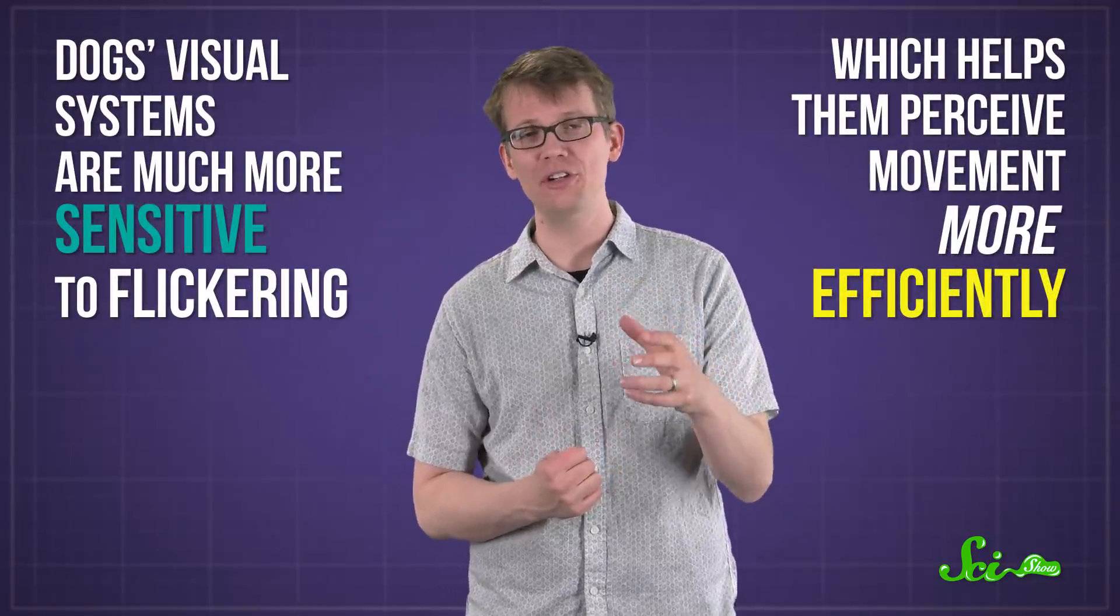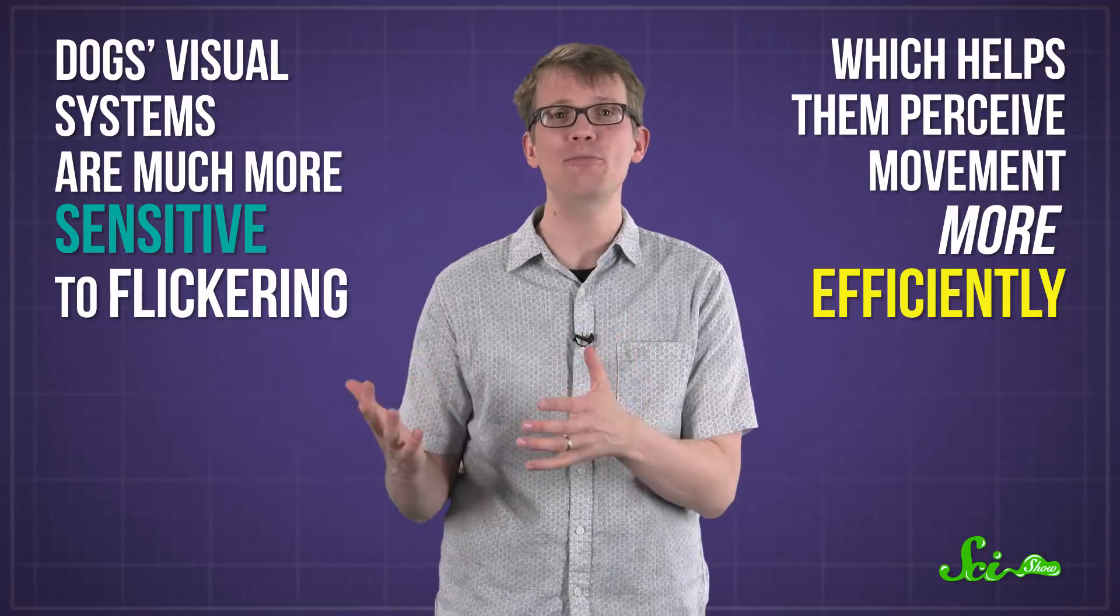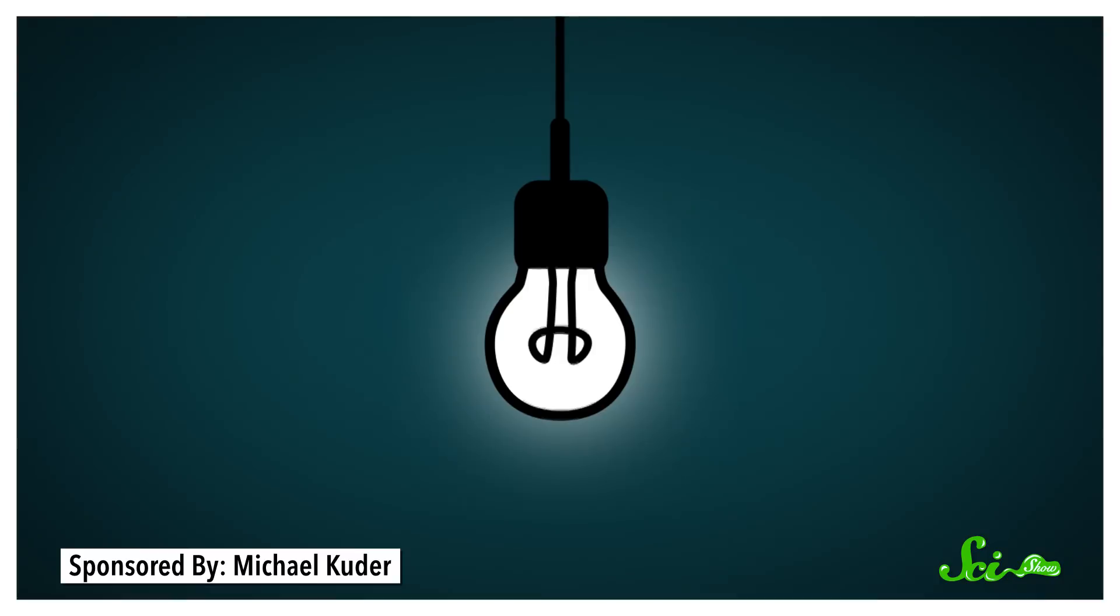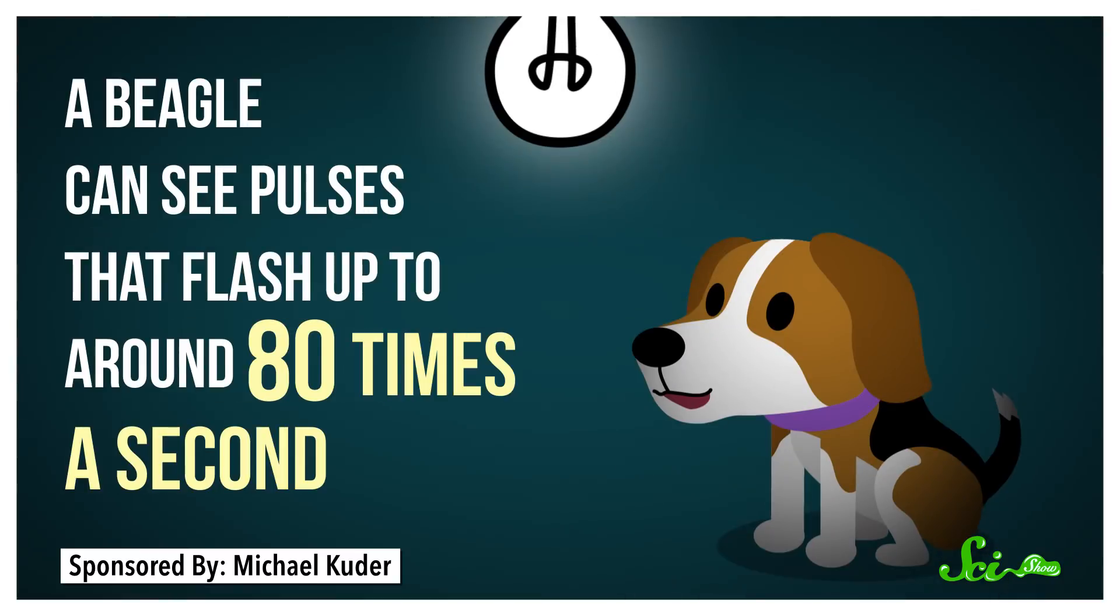Dogs' visual systems are much more sensitive to flickering, which helps them perceive movement more efficiently. So if you were to start flashing a light on and off slowly, and then ramp up the speed, you'd stop being able to distinguish the flashes when it's flickering faster than 55 times per second. A beagle, on the other hand, can see pulses that flash up to around 80 times a second.